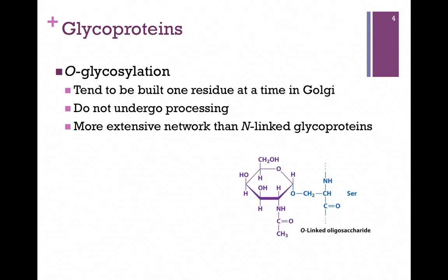In O-glycosylation, it tends to be a more extensive network than with N-linked glycoproteins. For that reason, rather than undergoing processing, we tend to build these up one residue at a time at the Golgi apparatus — again, because it's a more extensive network. All you need to remember about O-glycosylation is that it's attached either to serine or threonine, that they're built one residue at a time in the Golgi, and that it's a more extensive network.